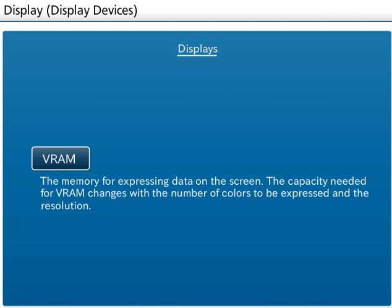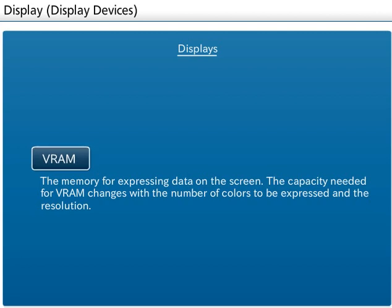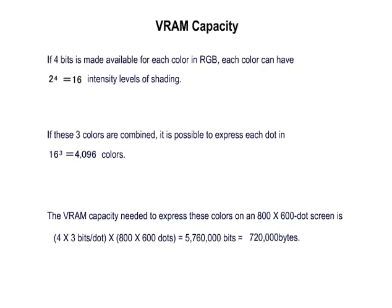The memory for displaying data on the screen for PCs is called VRAM, video RAM. The capacity needed for VRAM changes with the number of colors to be expressed and the resolution. For example, if 4 bits is made available for each color in RGB, each color can have 2 to the power of 4, equals 16, intensity levels of shading. By combining these three colors, it is possible to express each dot in 16 to the power of 3, equals 4096, colors. The VRAM capacity needed to express these colors on an 800 times 600 dot screen is 720,000 bytes.